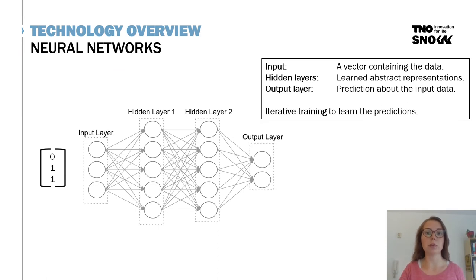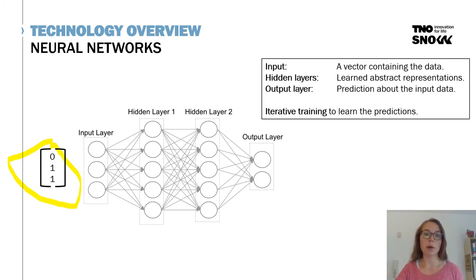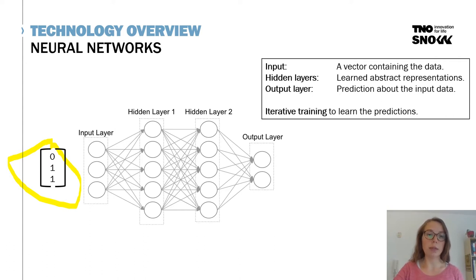A neural network takes a vector as input — for example, a vector such as 0, 1, 1 — and uses it to make a prediction at the output. This prediction is made using weights placed on the vectors to construct hidden layers. In the hidden layer, you get an abstract representation of your input data, which can then be used to make predictions about your data. The way these hidden layers are constructed is learned based on the training data available.